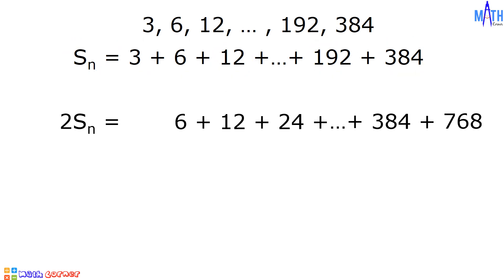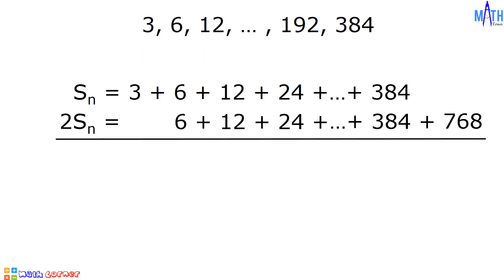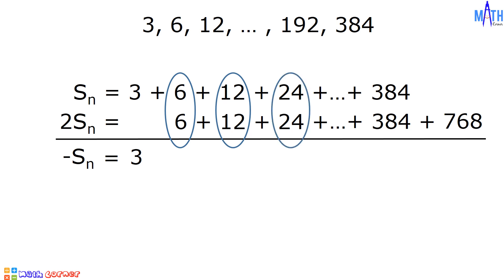We have two equations. And if you will notice, in these two equations there are common terms. Let us rewrite the first equation as S sub n equals 3 plus 6 plus 12 plus 24 all the way to 384. To solve for S sub n, let us subtract these two equations. S sub n minus 2 S sub n is equal to negative S sub n. 3 minus 0 is equal to 3. 6 minus 6 is equal to 0. 12 minus 12 is equal to 0. 24 minus 24 is equal to 0. All the way to 384 minus 384 which is also equal to 0.